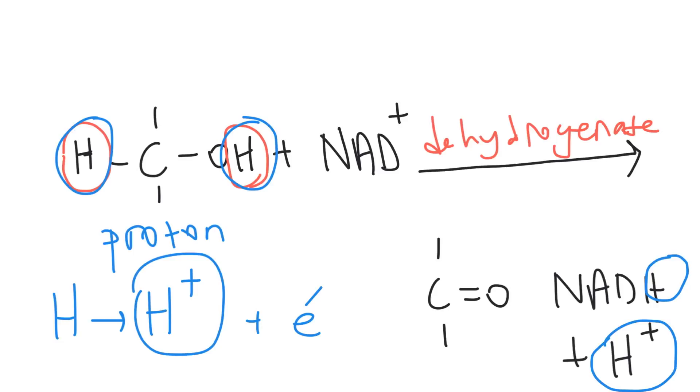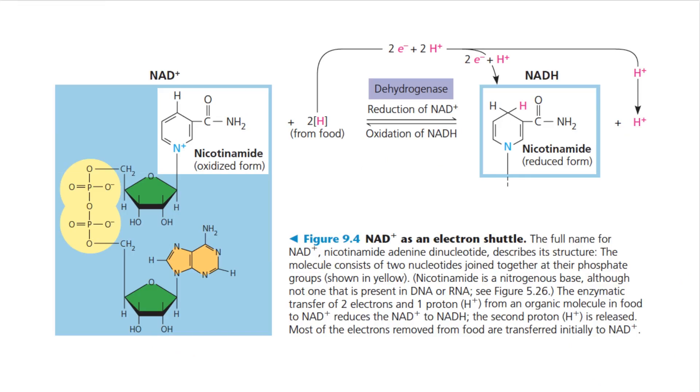So NAD plus is the most versatile electron acceptor in cellular respiration and functions in several of the redox steps during the breakdown of glucose throughout the cellular respiration.